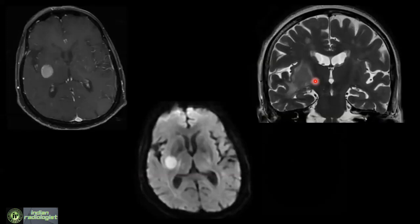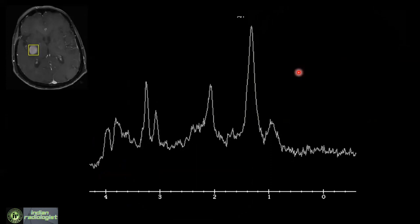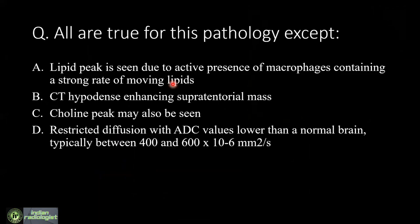Another set of images: post-contrast axial T1, diffusion, and coronal T2, showing a lesion with homogeneous enhancement, restricted diffusion, and T2 hypointensity. Single-voxel spectroscopy was also obtained for this patient. The question asks: all are true for this pathology except — the options include lipid peak due to macrophages containing lipid, CT hypodense enhancing supratentorial mass, choline peak may be seen, and restricted diffusion is characteristic.